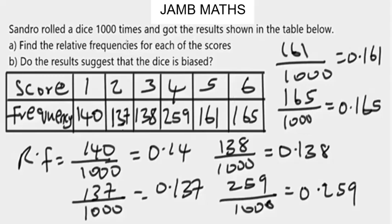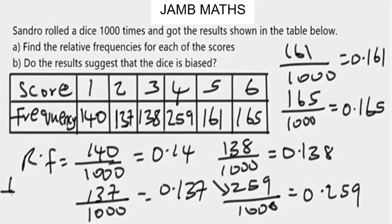For part b — do the results suggest that the dice is biased? Yes, because the relative frequency for when the score is 4 is 0.259, which is much higher than you would expect from a fair dice, which is 1 over 6, or approximately 0.166 repeating.